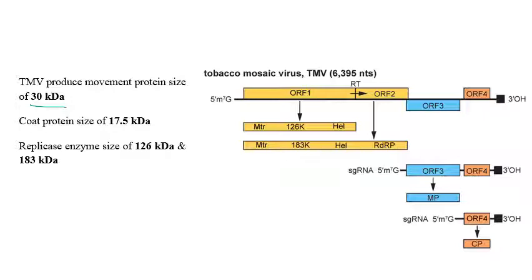The TMV movement protein size is 30 kilodaltons. Plant viruses move from one cell to another through plasmodesmata, but plasmodesmata are smaller than the virus particle. To overcome this, TMV produces a 30 kDa movement protein (MP) that facilitates cell-to-cell movement through plasmodesmata. Exam questions may ask: cell-to-cell movement of TMV is mediated through plasmodesmata by producing a movement protein.